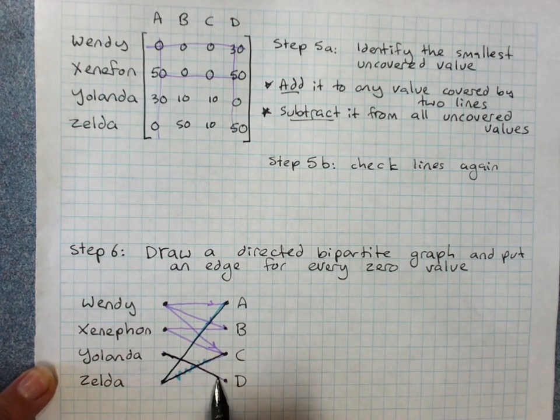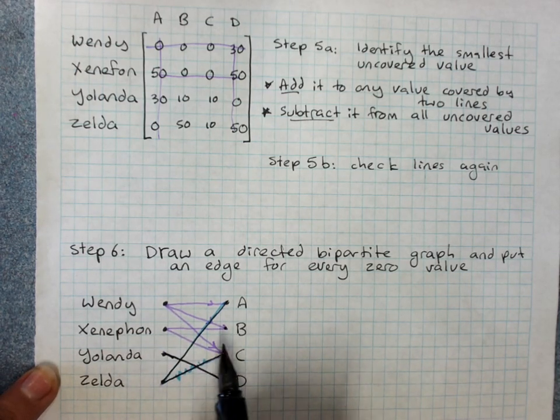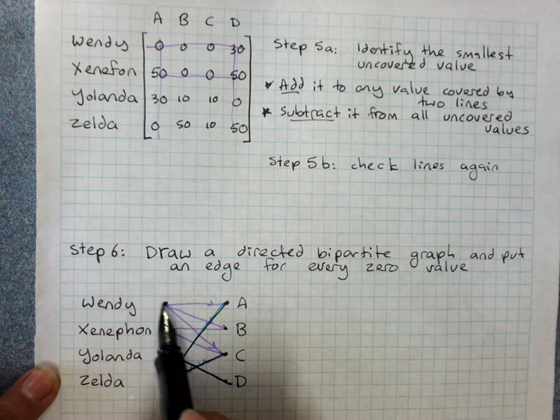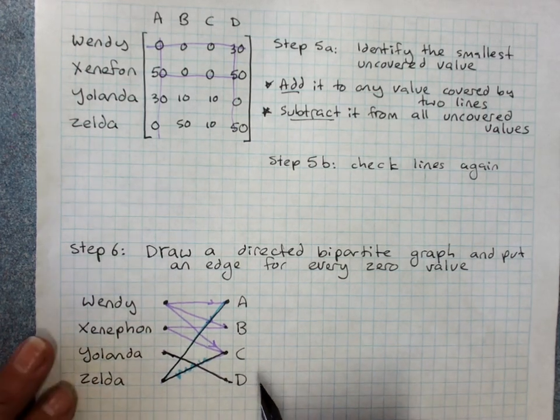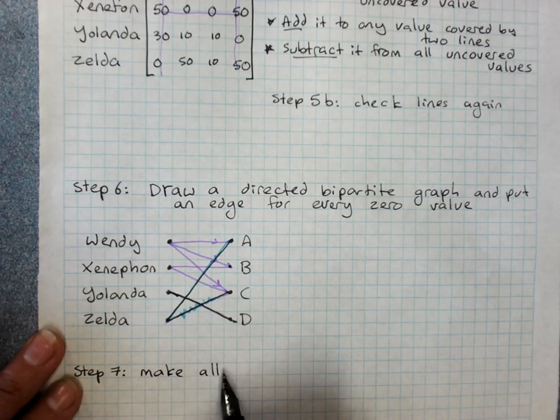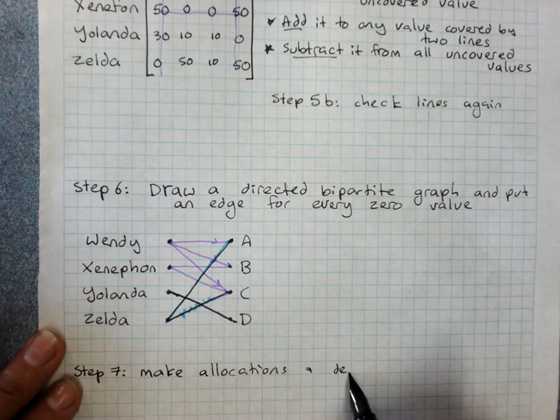Zelda has to do A. Yolanda has to do D. And Wendy and Xenophon can do either Wendy does A, Xenophon does... Sorry. Wendy does B, Xenophon does C or the other way around. So, step seven, make the allocations and determine minimum cost.